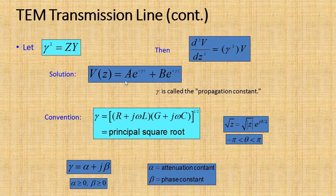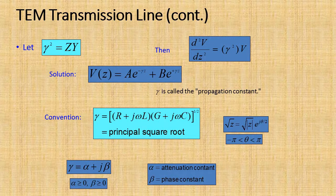The propagation constant is a very important parameter in transmission line analysis. It is a complex quantity represented by α + jβ, where alpha represents the attenuation constant and beta represents the phase constant. If alpha is equal to zero, there is no loss in the transmission line — it represents a lossless line. Beta represents the phase constant, which means 2π/λ. If beta is equal to zero, there is no propagation of the wave, meaning no energy propagation from source to destination.